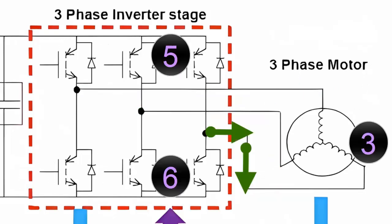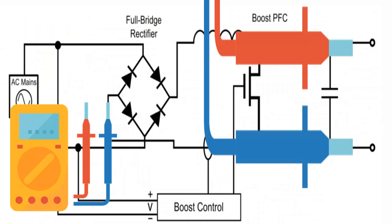Additionally, the IPM circuit controls the frequency or the number of times the transistors allow the passage of current, thus regulating the speed of the compressor motor.